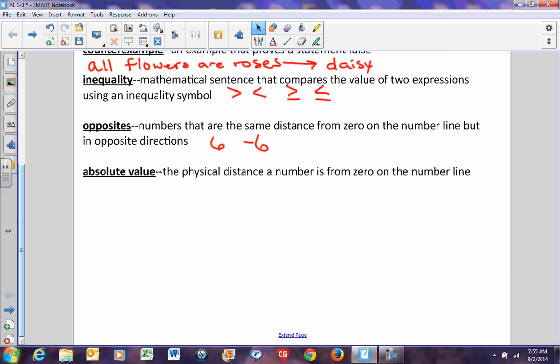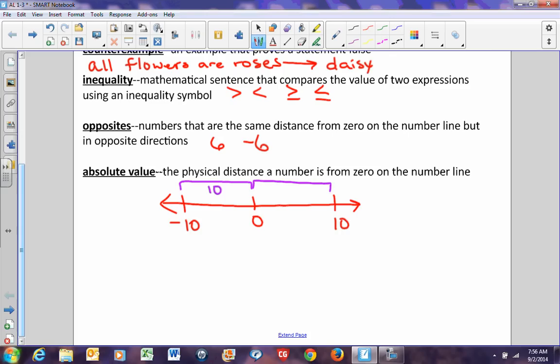Absolute value is the physical distance a number is from zero on the number line. Physical distance can never be negative. You can't travel negative 6 miles. You can travel 6 miles in the wrong direction, but you still travel 6 positive miles just in the wrong direction. Therefore, if I was trying to tell someone that they needed to start at zero and go to negative 10, they actually took 10 physical steps just in the negative direction, just as you can take 10 physical steps in the positive direction if you move from zero to 10, meaning that absolute value is always positive.